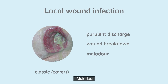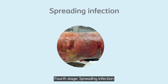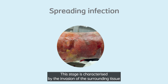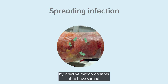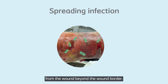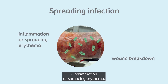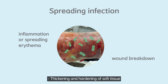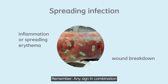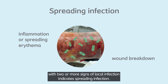Stage 4: Spreading infection. This stage is characterized by the invasion of surrounding tissue by infective microorganisms that have spread from the wound beyond the wound border. Signs and symptoms may include wound breakdown or breakdown of surrounding areas, inflammation or spreading erythema more than 2 cm beyond the wound edge, thickening and hardening of soft tissue, and swelling of lymph glands. Remember, any one of these signs in combination with two or more signs of local infection indicates spreading infection.